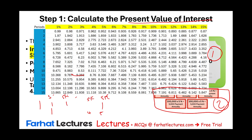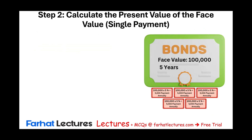Using the present value annuity table with n=5 and i=6%, the factor is 4.2124. Taking $5,000 multiplied by 4.2124, those five payments are worth $21,062 today. Notice that from a pure dollar perspective those five payments total $25,000, but the investor will pay only $21,062 to receive $25,000 over five years. That is the first component of the bond.